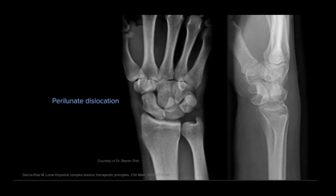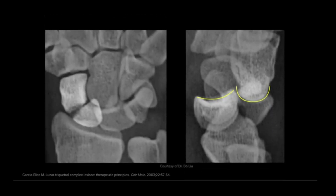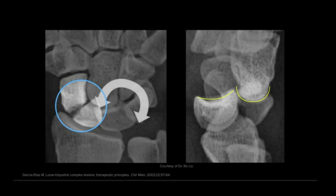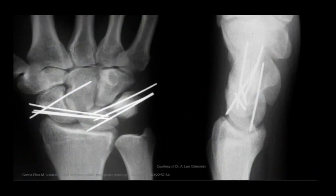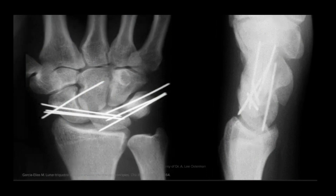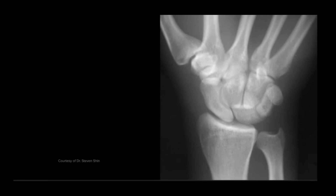Perilunate dislocation is a severe traumatic injury of the wrist with complete rupture of the scapholunate and lunotriquetral ligaments, resulting in a floating lunate. The high energy vector breaks the scaphoid, continues around the lunate, and tears the lunotriquetral ligament. The lateral x-ray view shows frank disruption around the lunate. This injury is usually treated with open reduction of the fracture and dislocation coupled with multiple pin fixations across the carpal bones. Another surgical option is the use of internal brace ligament augmentation to maintain suspension of the lunate, reduction of the dislocation, and stabilization of the carpal unit.